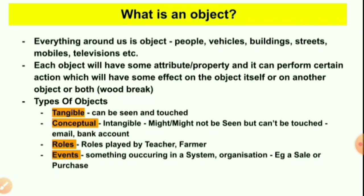The other thing an object will possess is the capability to perform some action. For example, take a bird — a bird is an object. What kind of actions can it perform? It can fly, it can dive, it can build nests, it can hunt. These are a few examples of actions of a bird. Whenever an object performs an action, that action will have some effect — at least on the object itself or on another object.